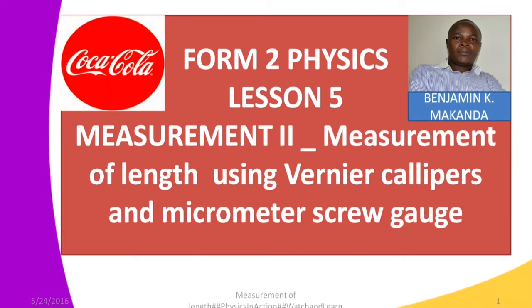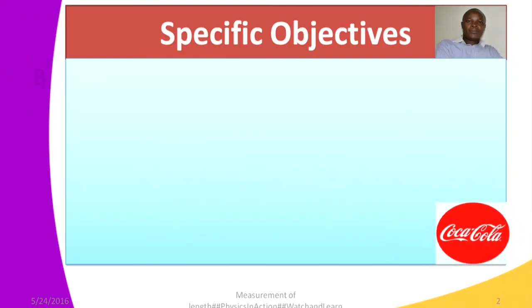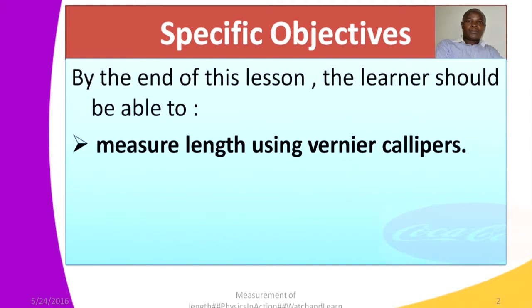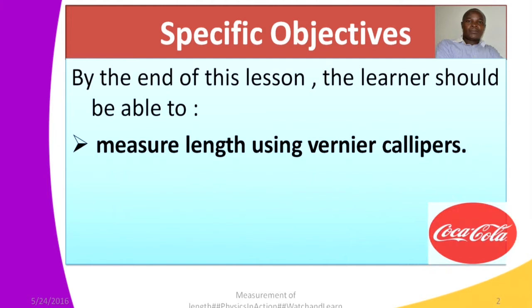Before we begin our lesson, we want to look at the specific objectives. By the end of this lesson, the learner should be able to measure length using Vernier calipers. This is the main objective of the lesson. Vernier calipers is just one of the instruments or apparatus that we use to measure, as we want to discuss.